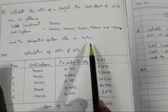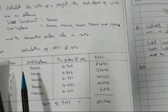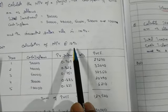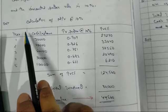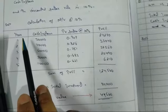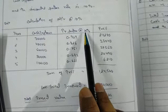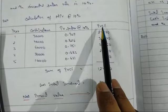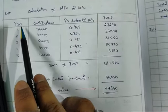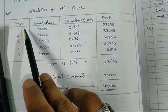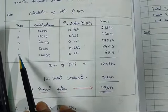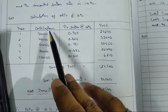Now we will see how to work through the problem. For the calculation of NPV at 10 percent, we need four different columns: Year, Cash Inflows, PV Factor at 10 percent, and PV of Cash Flows. We write years one through five and fill in the cash inflows for all five years as mentioned.